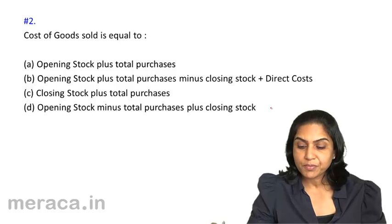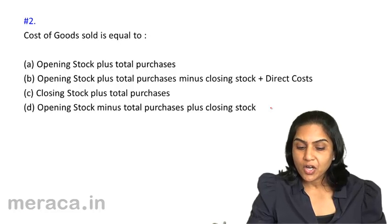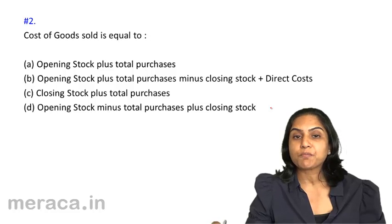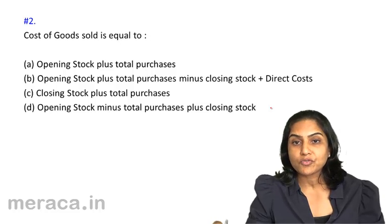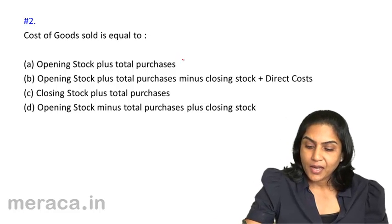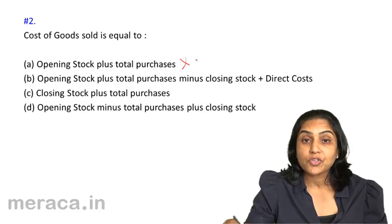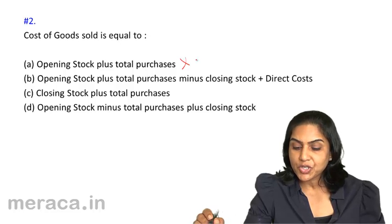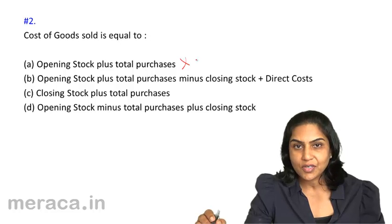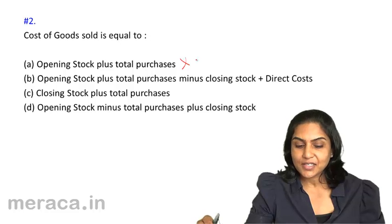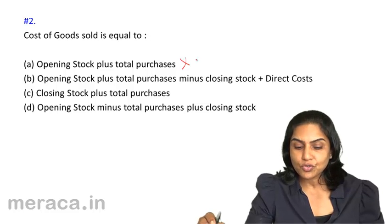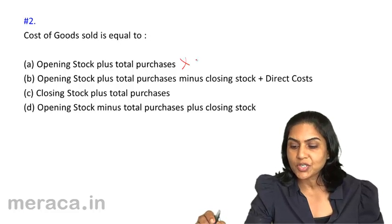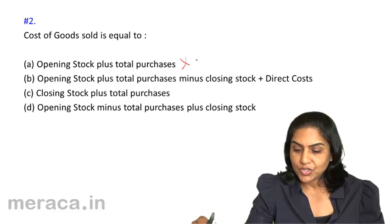Cost of goods sold: let's consider all the options. Opening stock plus purchases — if there are no direct costs, opening stock plus purchases will actually be the cost of goods available for sale, not really the cost of goods sold. Option B: Opening stock plus purchases minus closing stock plus direct costs — that appears to be the correct answer, because cost of goods sold is opening stock plus purchases plus direct costs less closing stock.